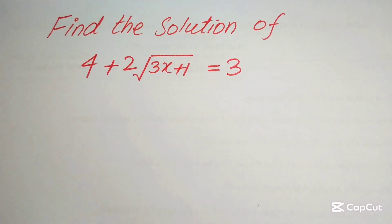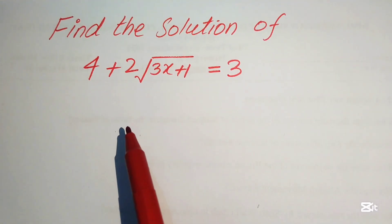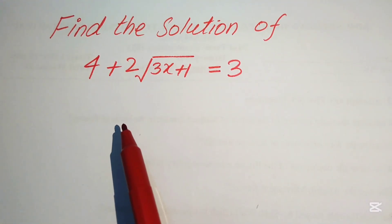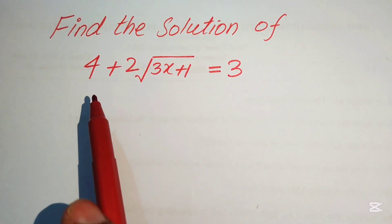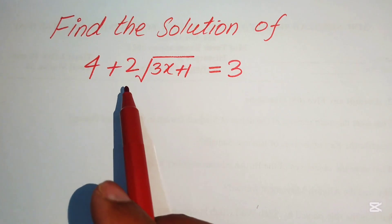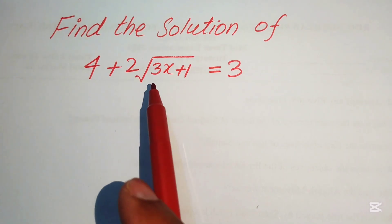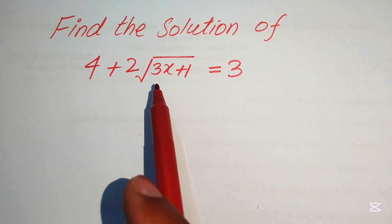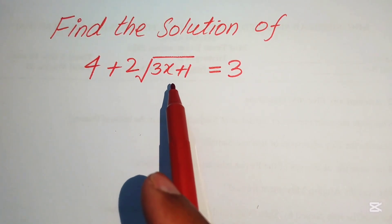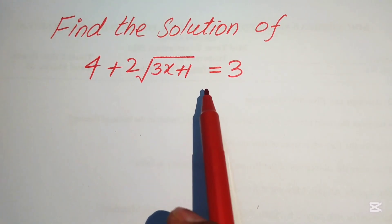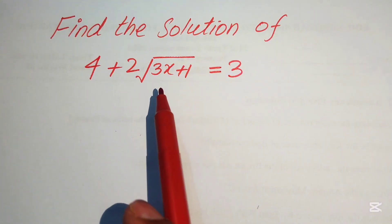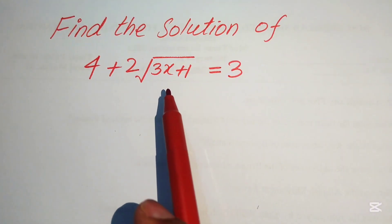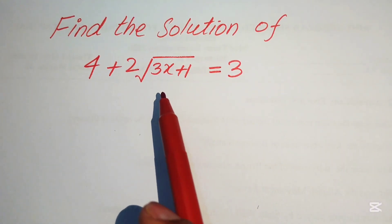Hello everyone, how to solve this nice radical equation? Here we have 4 plus 2 into square root of 3x plus 1 equals to 3. Here we find the solution of this equation.